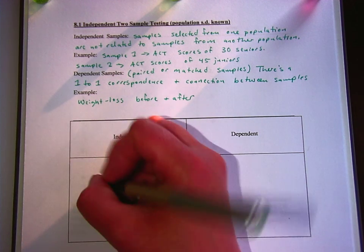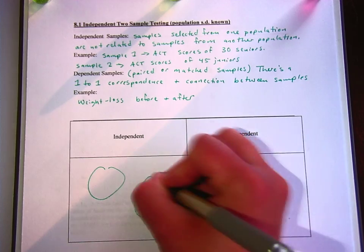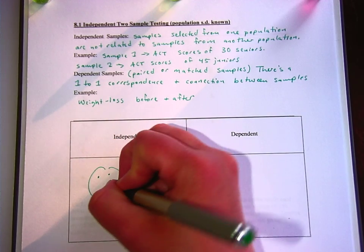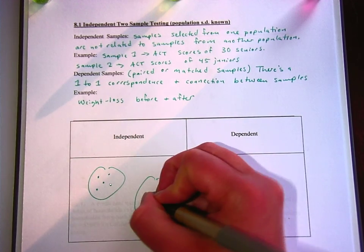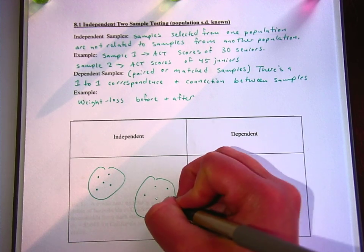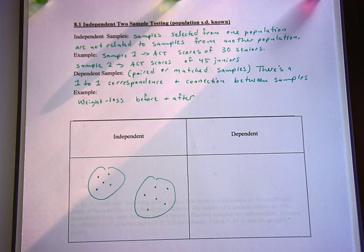Okay, independent looks like this. You've got two populations. Wonderful pictures there. This population has some numbers in it, and they don't necessarily have the same amount of numbers in each population, and they are not related to each other, so there's no overlap.